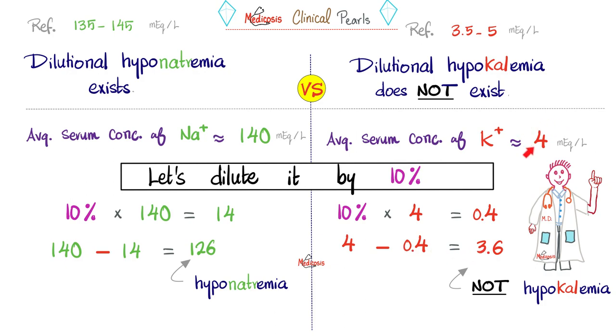But how about this person? Dilute the potassium by 10%, what do you get? 3.6. Is this hypokalemia? No, 3.6 is still within the normal reference range. So this patient is not hypokalemic. This patient will not suffer symptoms.